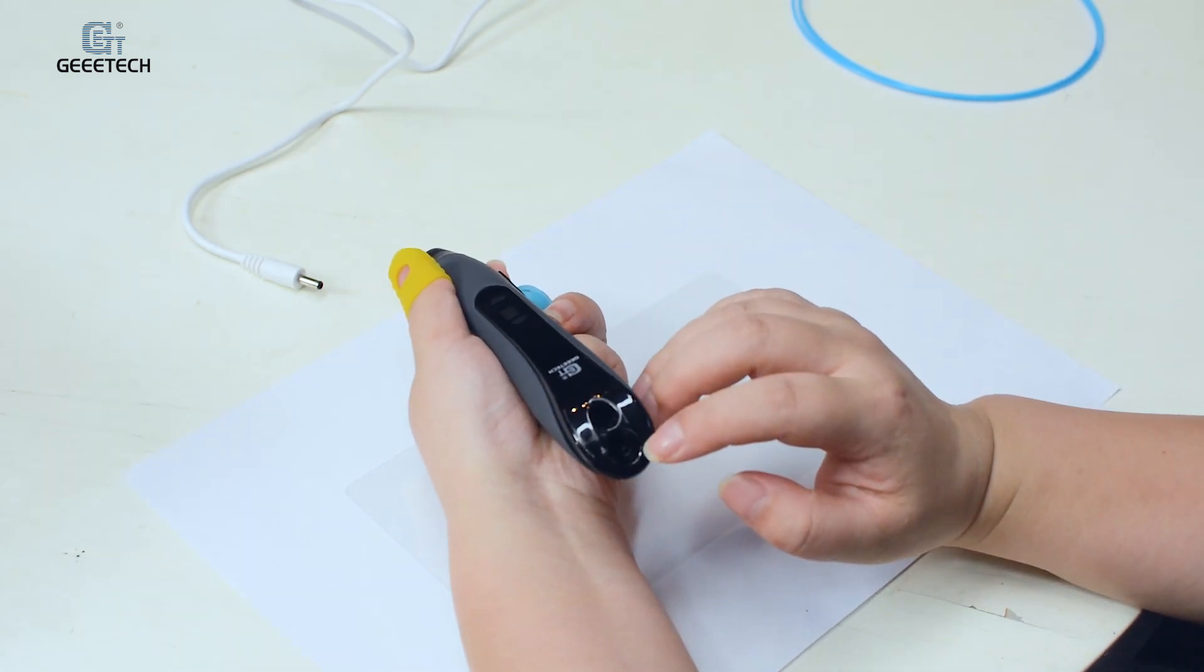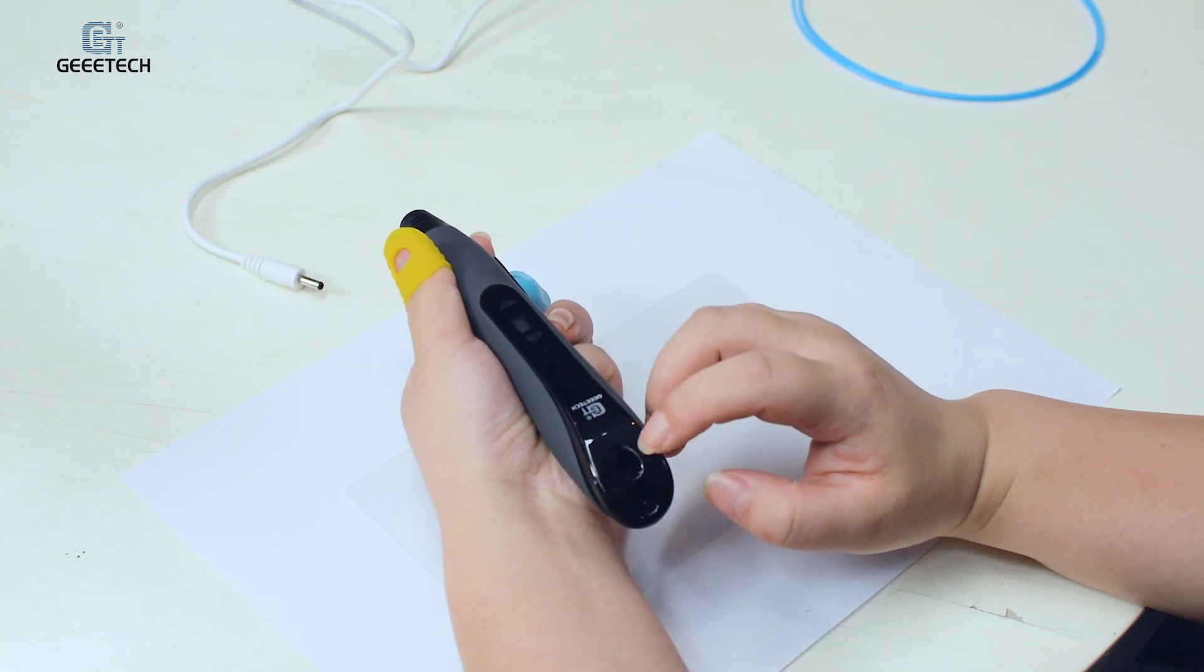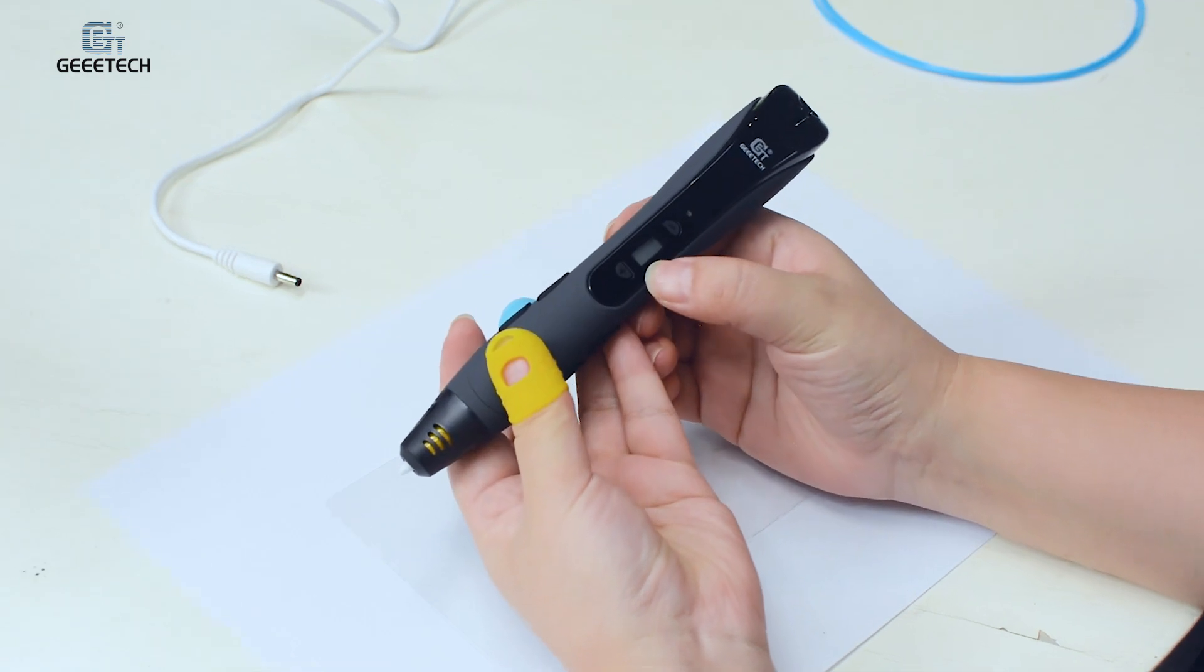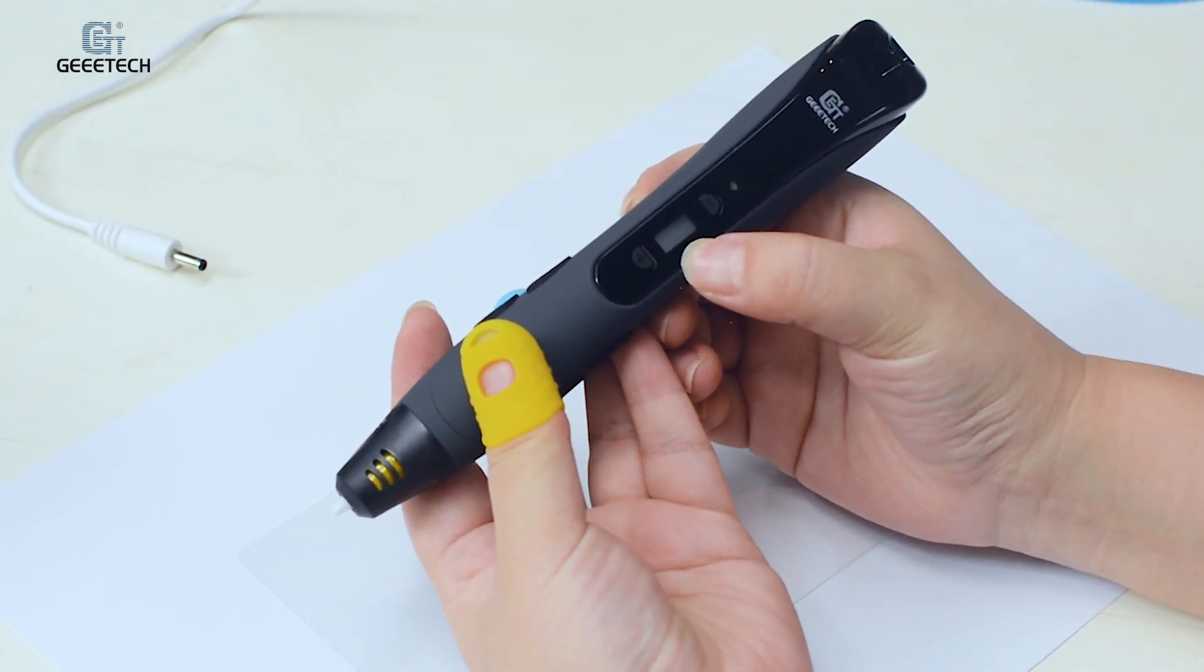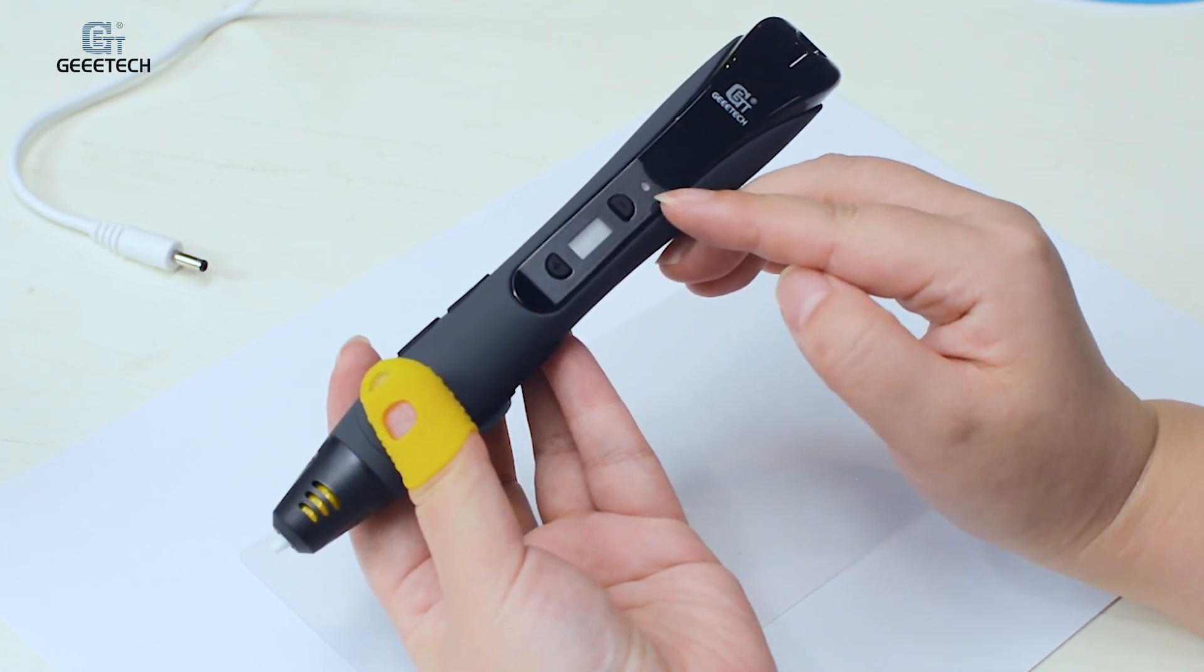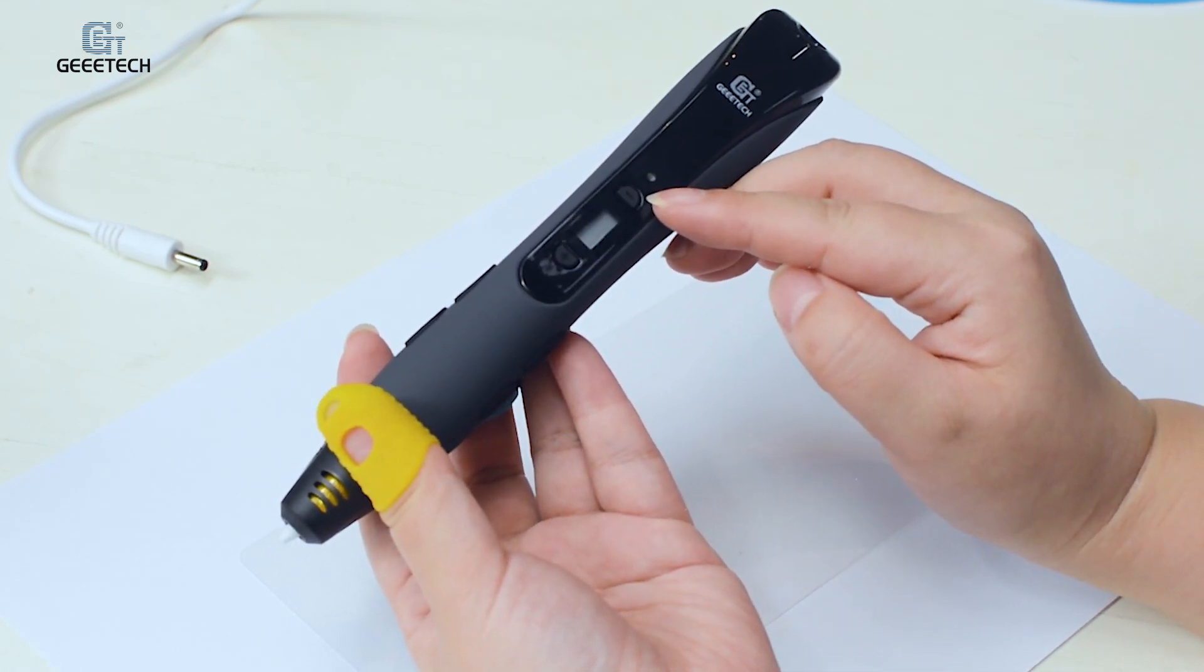This is the power input hole and the filament loading hole. The screen for showing the temperature. And these two buttons are for choosing the filament and for temperature.